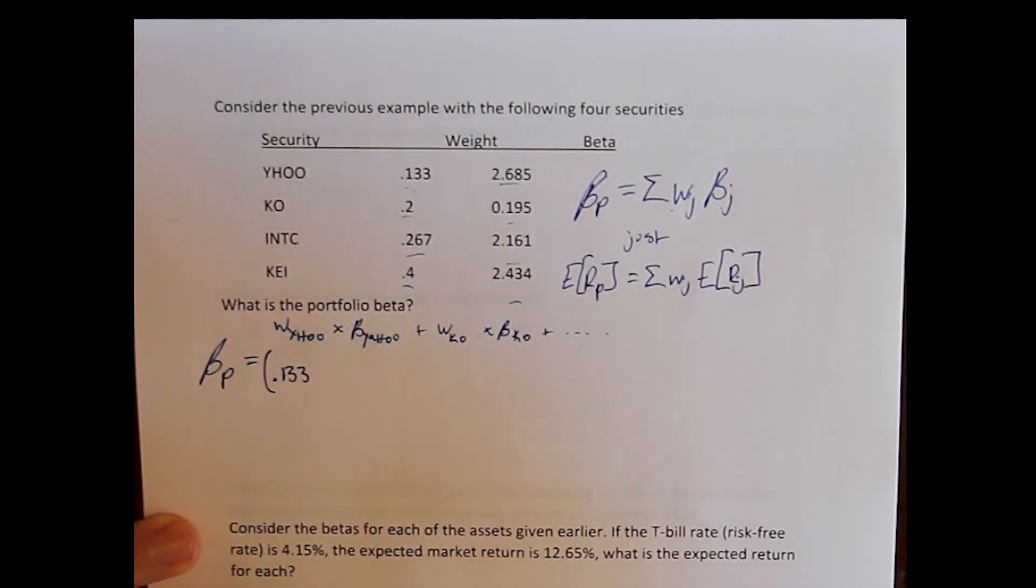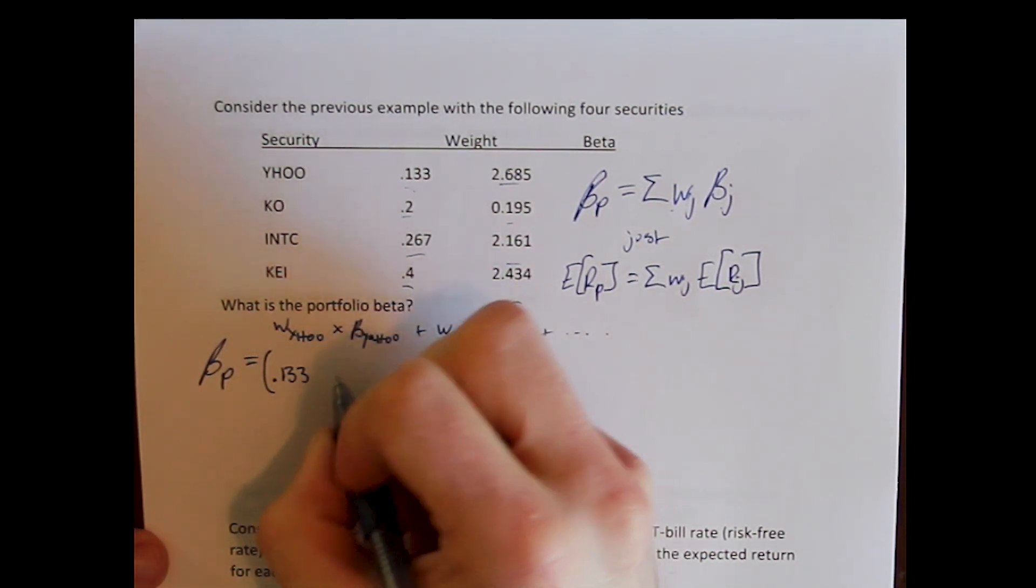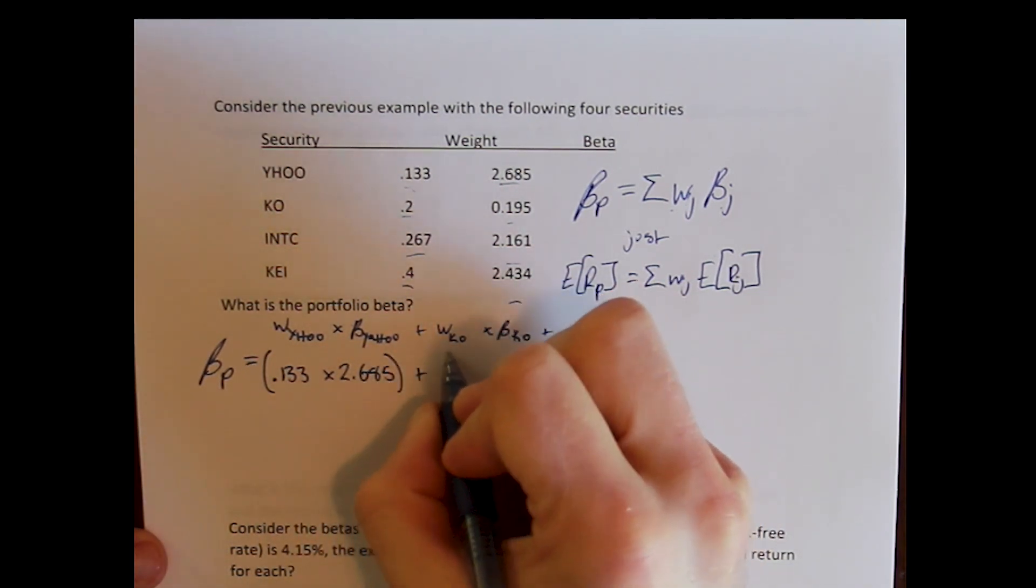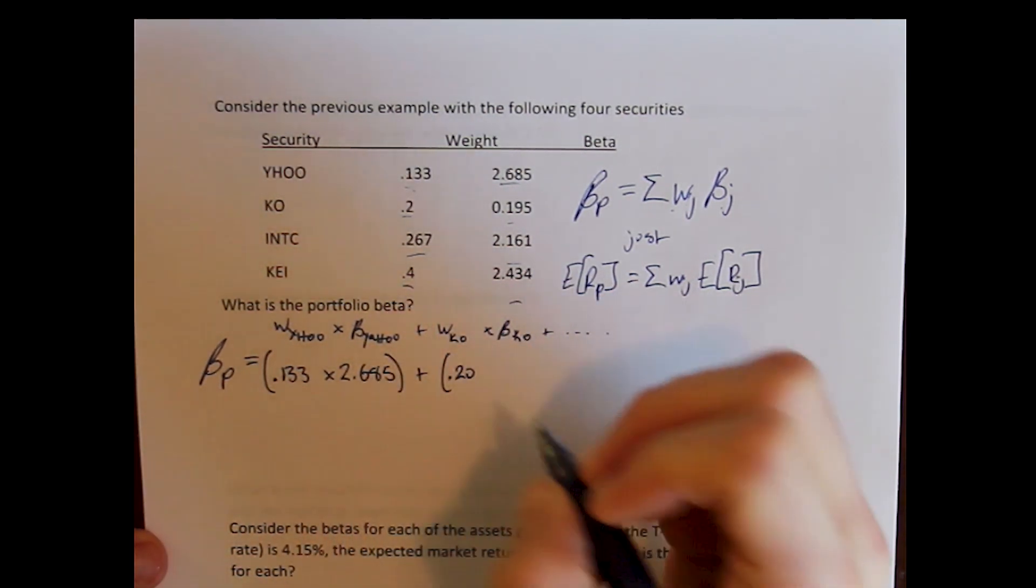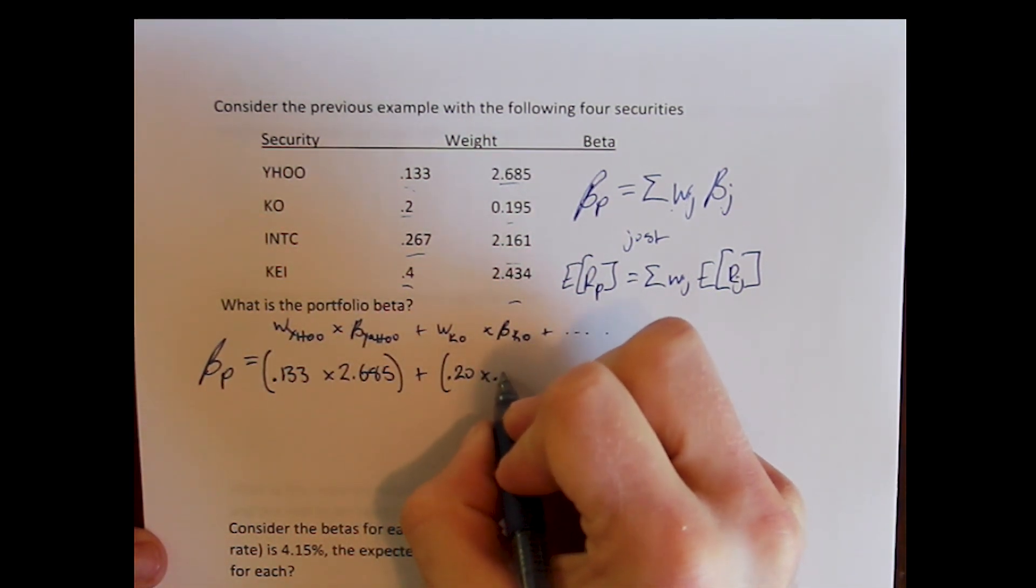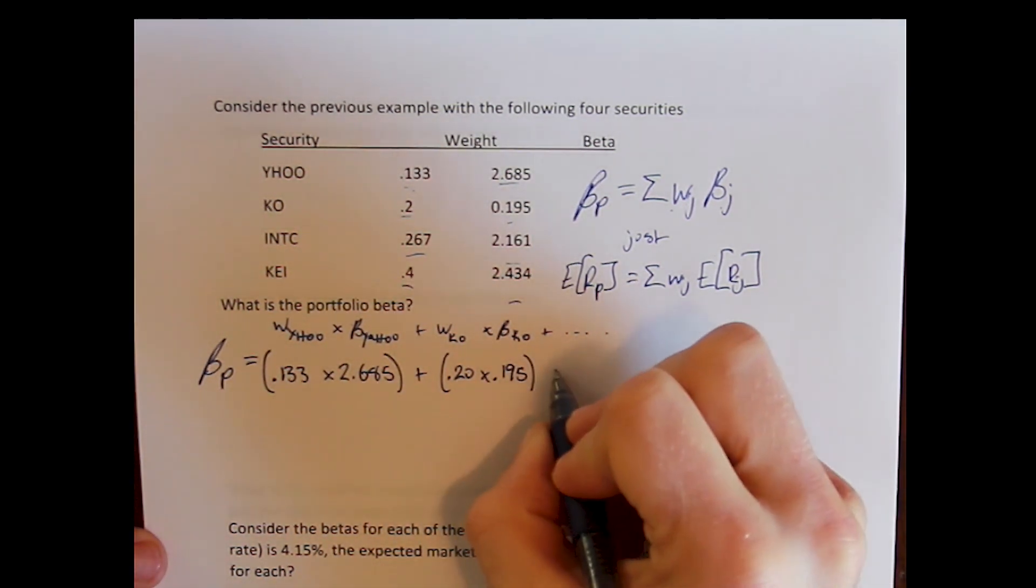Weight of Yahoo in the portfolio, 13.3% times the beta for Yahoo, 2.685 plus the weight of Coca-Cola in the portfolio, 20% of our portfolio is Coke. The beta for Coca-Cola 0.195 plus